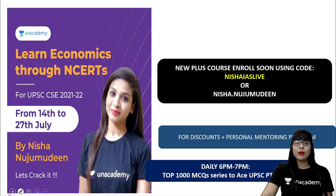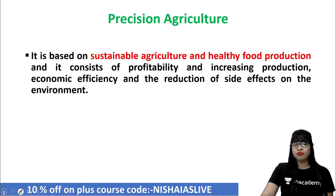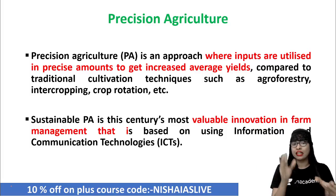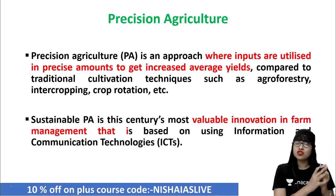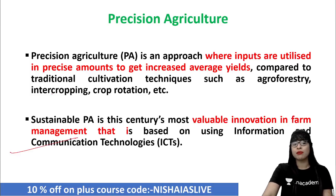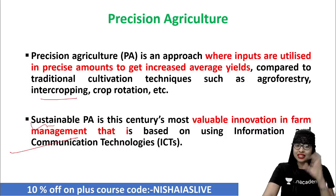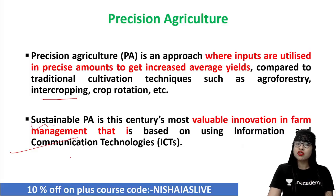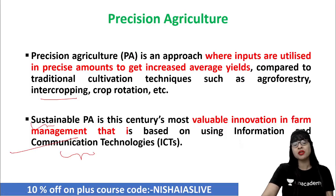So now without much delay, a quick look into precision agriculture. It is an approach where inputs are utilized in a very precise or exact amount, so then you will be getting the maximum or average yields compared to conventional or traditional cultivation techniques like crop rotation, agroforestry, and intercropping. Sustainable precision agriculture, or PA, is this century's most valuable innovation as far as farm management is concerned, because precision agriculture is based on ICT — information and communication technology. In a technology-driven era, agriculture also has to be highly technology-driven, and for that we have precision agriculture.